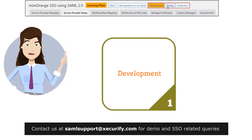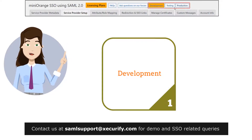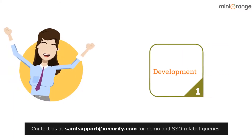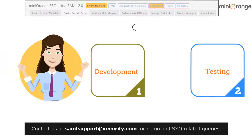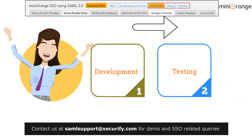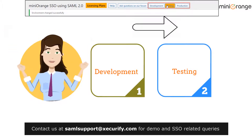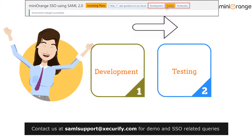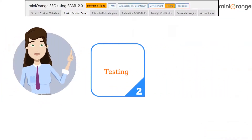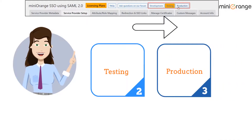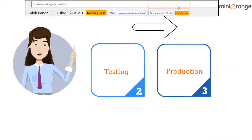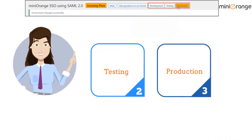You can toggle between the settings using these buttons. Once you have successfully configured the settings on your development environment, you can migrate from development to testing environment. You can then test the SSO on your testing environment and then migrate to the production environment.